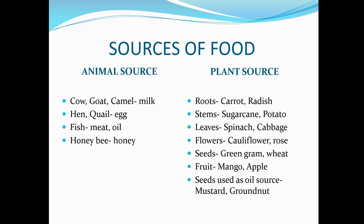We eat cauliflower and broccoli, which are the flowers of the plant. We eat fruits such as mango, papaya, and orange — fruits are often sweet, juicy, and fleshy. The seeds of many plants are eaten as food; pulses are also seeds of the plant. Spices such as cumin seeds, fennel, and coriander are also seeds. Certain seeds from which we extract oil, like mustard and groundnut, are called oil seeds.